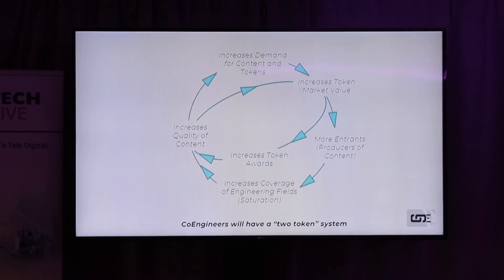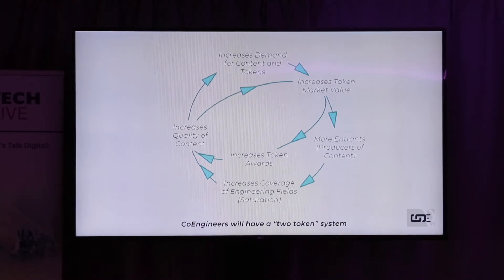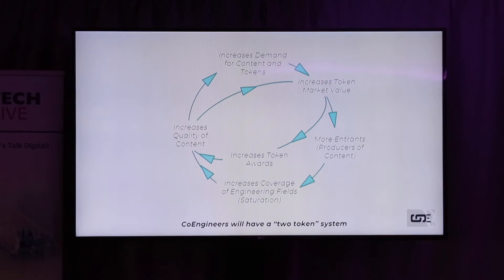Some of you might be familiar with that diagram — it's essentially a clone of the diagram that the developer of Uber sat down to explain to investors what Uber was. He developed this system of: increased market value, more entrants, produces good outcomes, increases token rewards — so you get this continuous cycle of increased value.